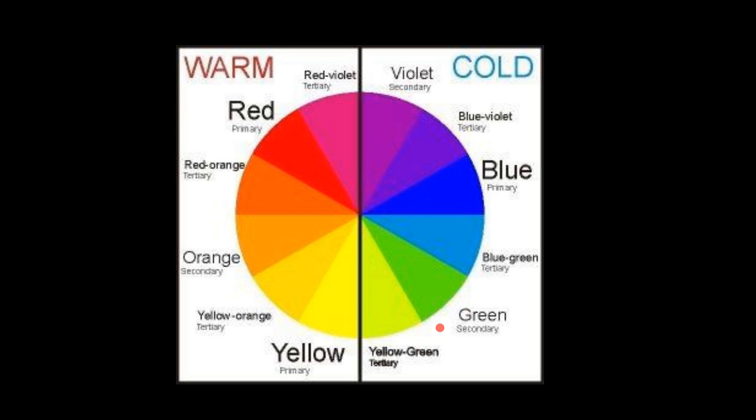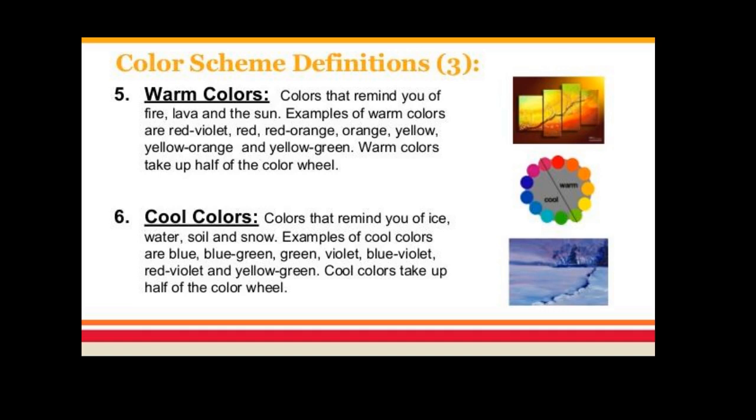Warm colors remind you of lava, fire, and the sun — examples include red, red-orange, orange, yellow-orange, and so on. Warm colors take up half the color wheel. Cool colors remind us of ice, water, soil, and snow — examples include blue, blue-green, green, violet, blue-violet, and so on. Violet is really the official term for what most folks call purple.